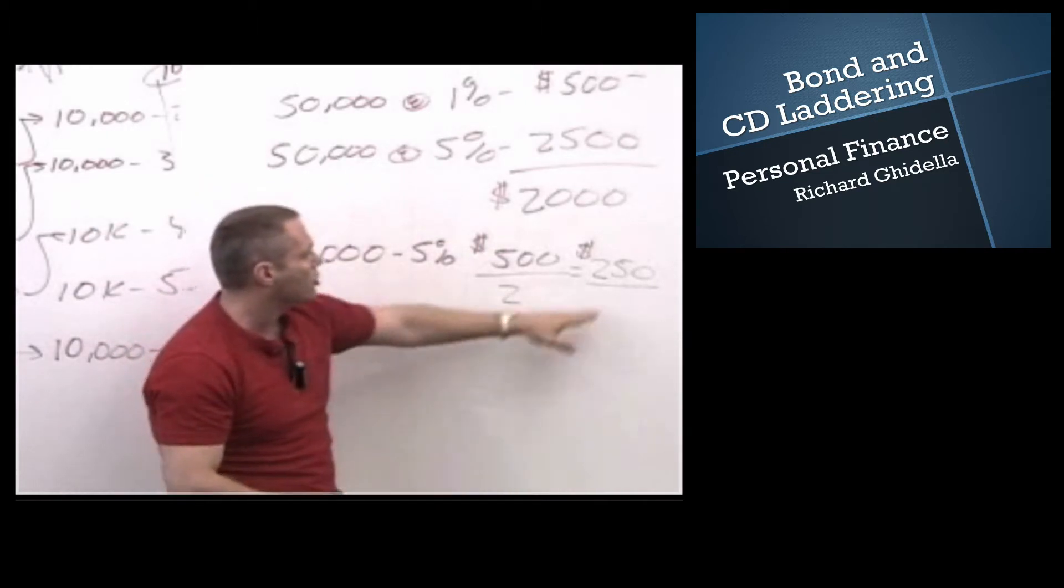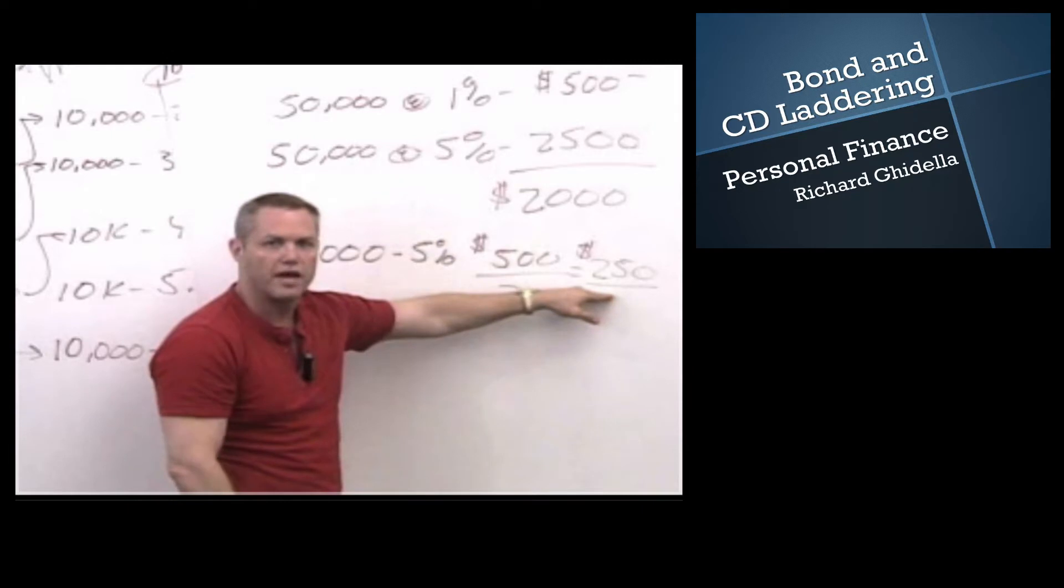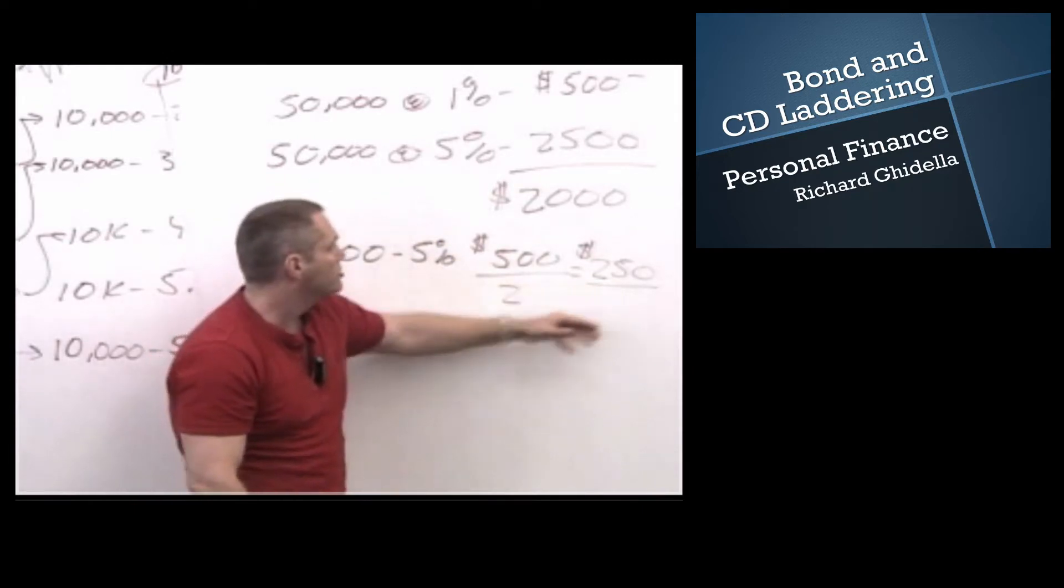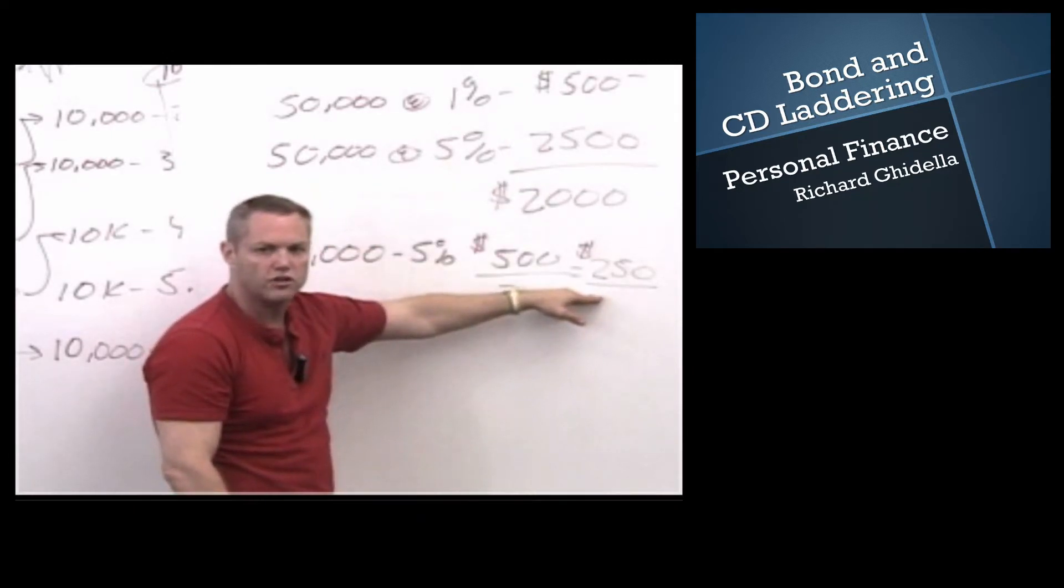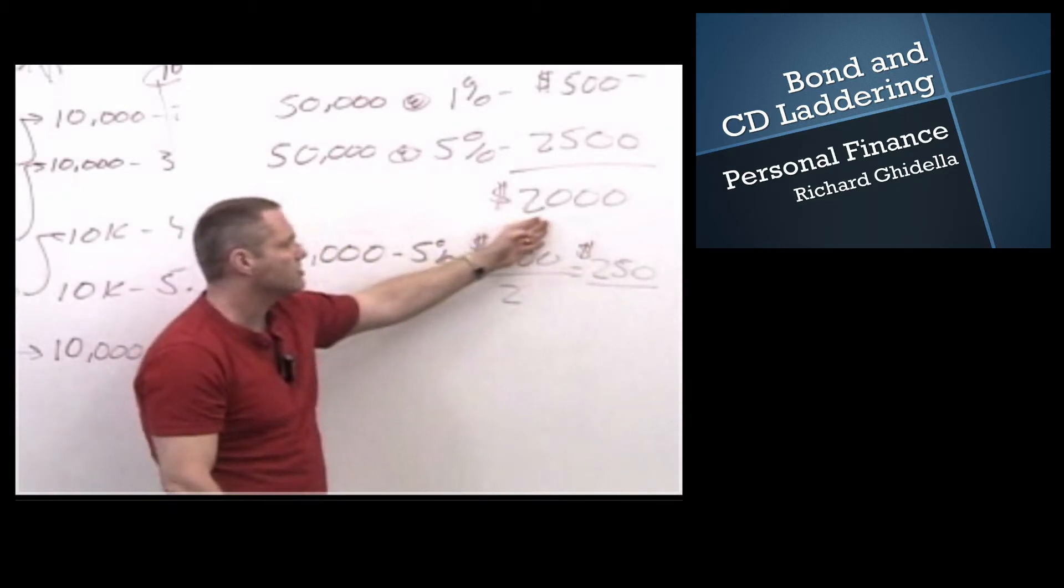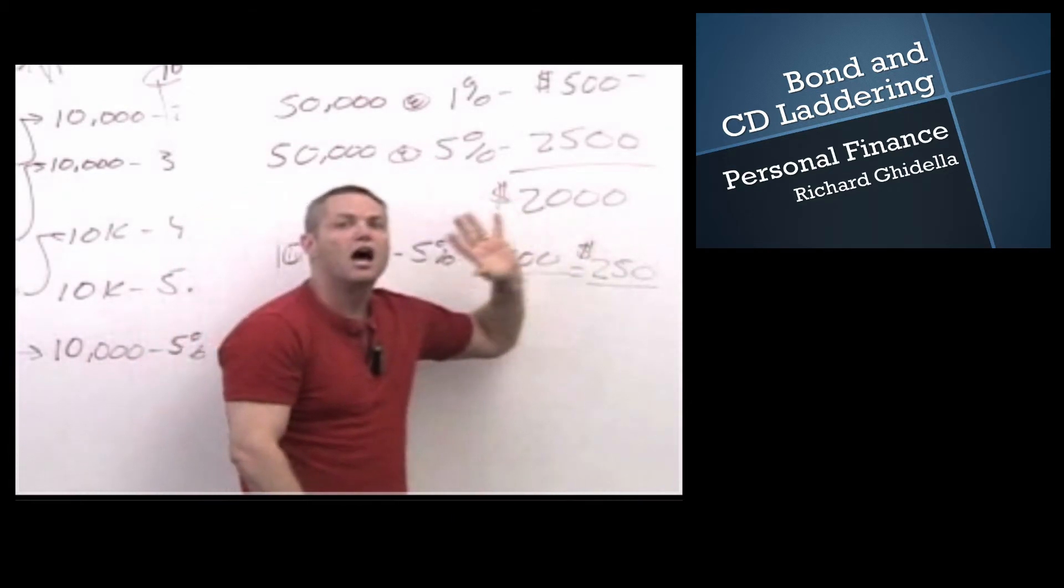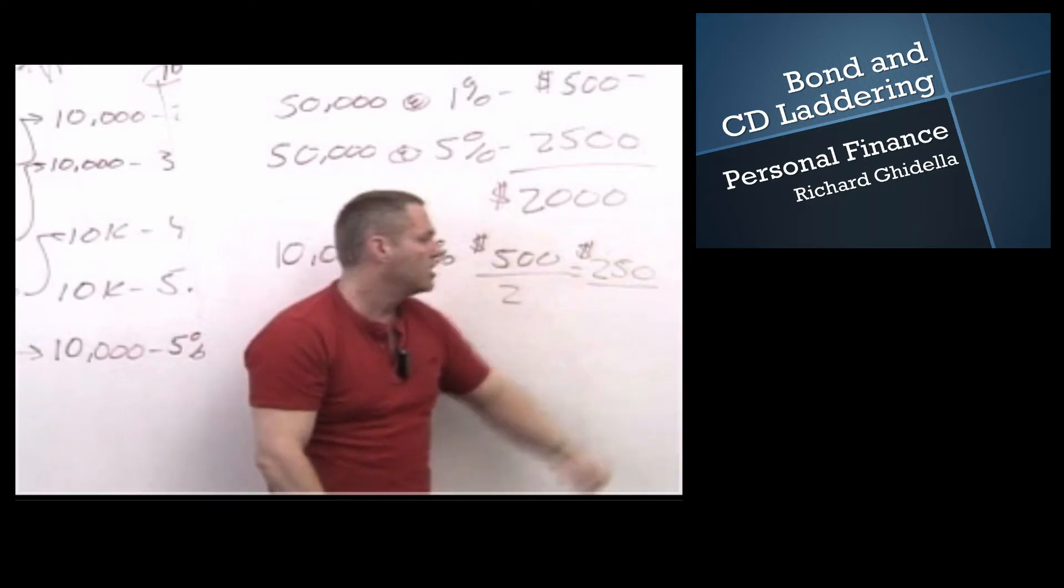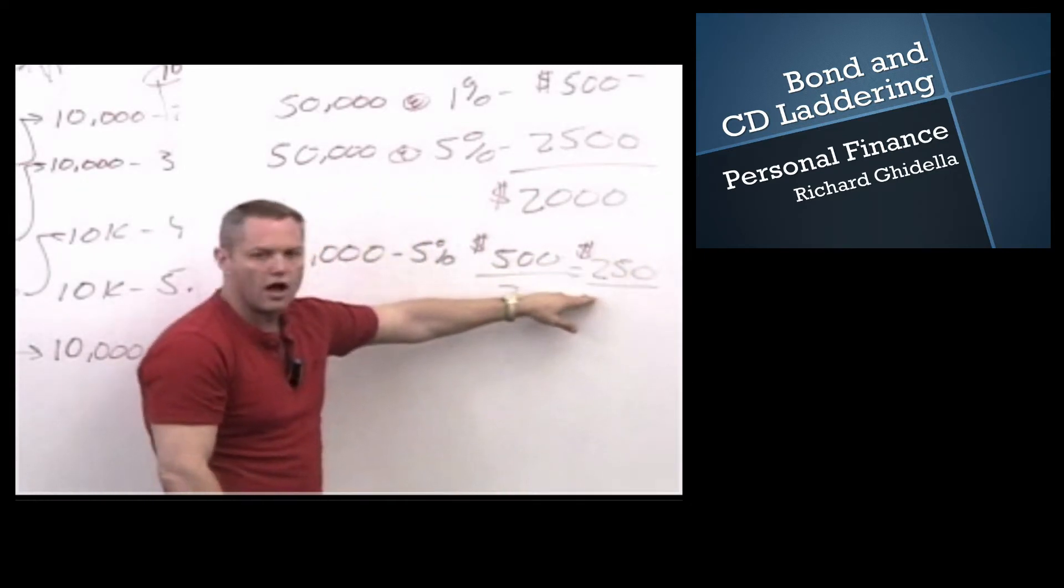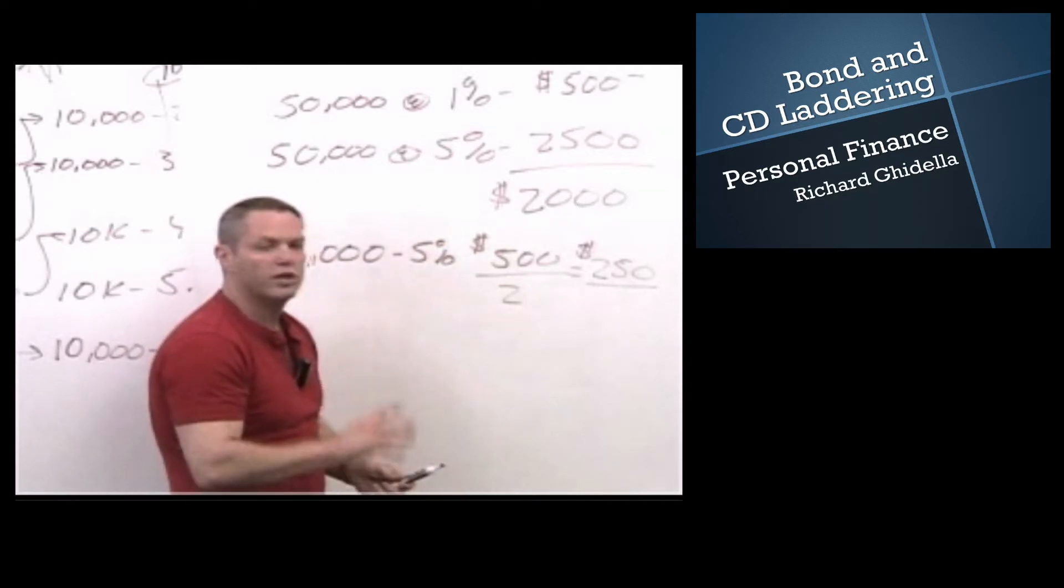By far, your best option here is to pay the penalty every two or three years. Shoot, under this system, you can pay a penalty every single year, and you're still $1,750 ahead of the game. And so, do not get all caught up on paying a penalty now and then. In the long run, you'll be way ahead.